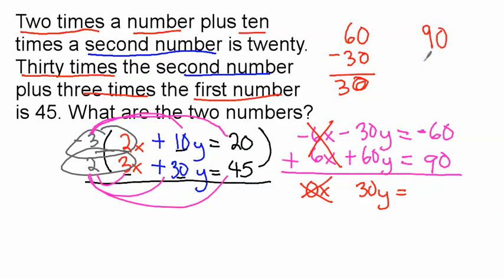And then we have to figure out the difference between 90 and negative 60. Because again, we're doing a negative and a positive. And it's 30, and the positive is bigger. So we have 30y equals 30. And we divide by 30, and y is going to equal 1.